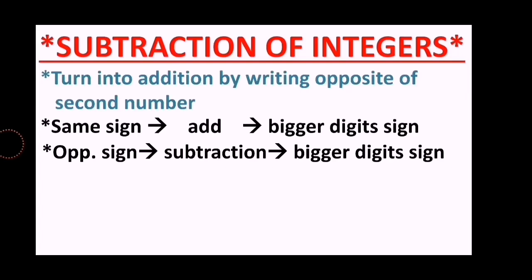The rules of subtraction consist of two steps. First, convert the subtraction into addition by writing the opposite number of the second number. Second, apply the same rules of addition: if same sign, add the numbers; if opposite sign, subtract the numbers. In both cases, give the bigger digit's sign to the answer.